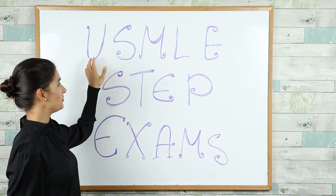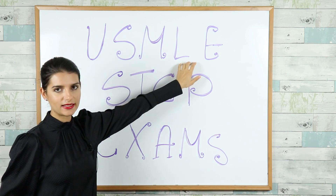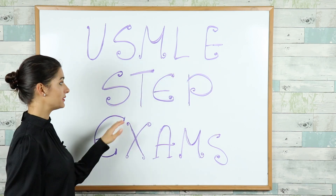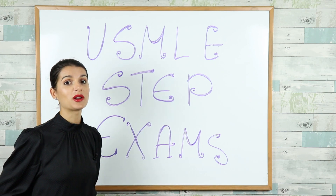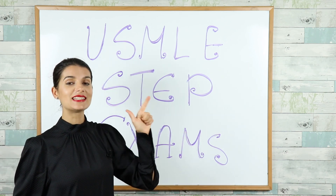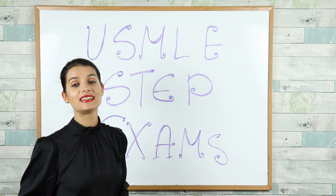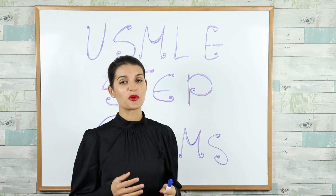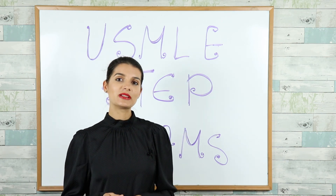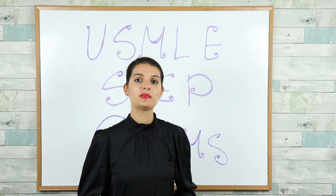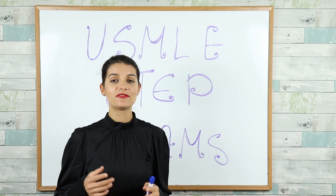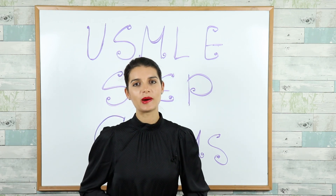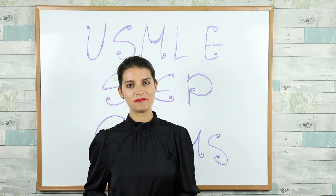USMLE stands for the United States Medical Licensing Examination, and the tests themselves are called the step tests. Basically you have to climb three steps: Step 1, Step 2, and Step 3. These are the three tests you have to pass and score very high on. Technically there are three exams, but in reality they're more like five because Step 2 and Step 3 have two parts each.